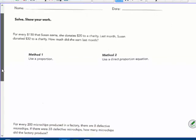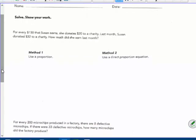Number one here says for every hundred and fifty dollars that Susan earns she donates twenty to a charity. Last month Susan donated thirty two dollars to a charity. How much did she earn last month?